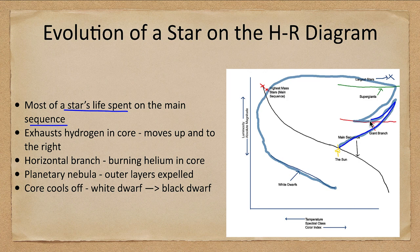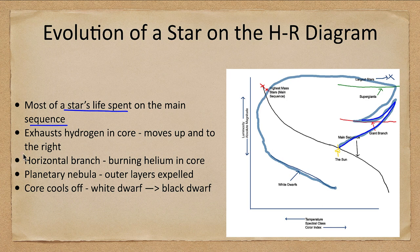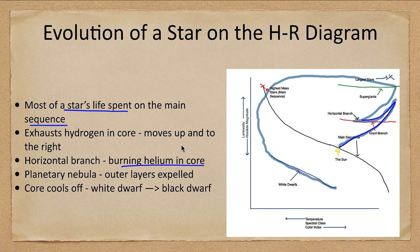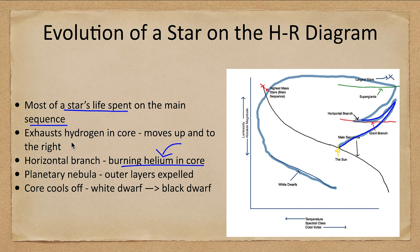However, once it exhausts the hydrogen in its core, it moves upward and follows the track here, and will eventually end up on the giant branch of the HR diagram. And that will be in what we call the horizontal branch. And that is where on the horizontal branch it is burning helium in its core. The star has reached a new stability with a new energy source. It has already exhausted all the hydrogen in the core and now found a way to burn helium.